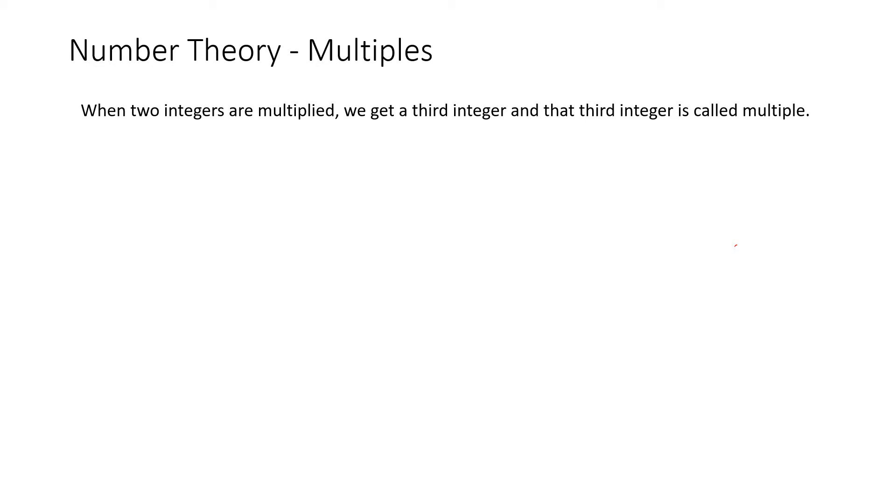This basically means three times six is equal to 18, so 18 is our multiple and three and six are known as our factors. Another example would be 2 times 5, which is 10, and so this is our multiple. Now based on this, I have a question for you guys.